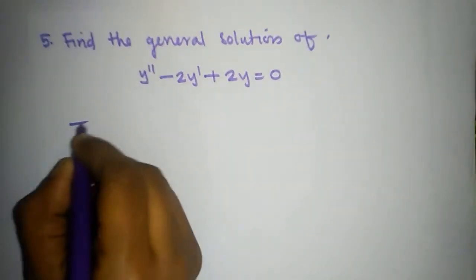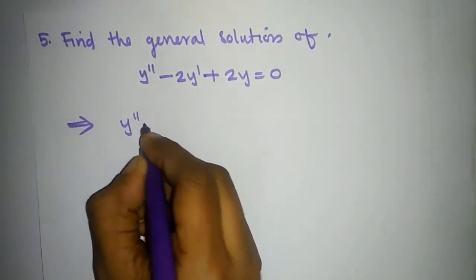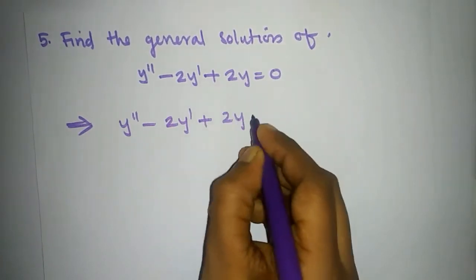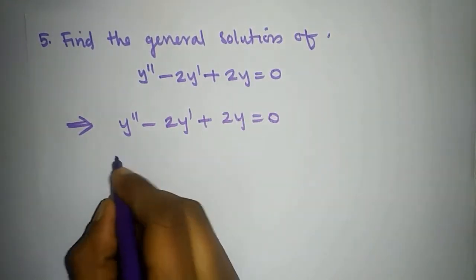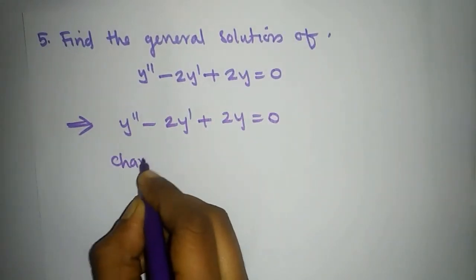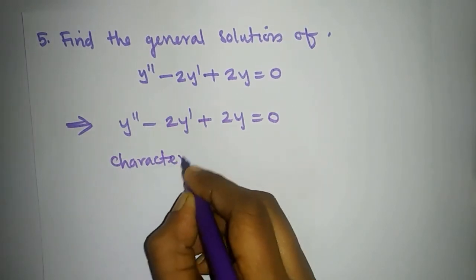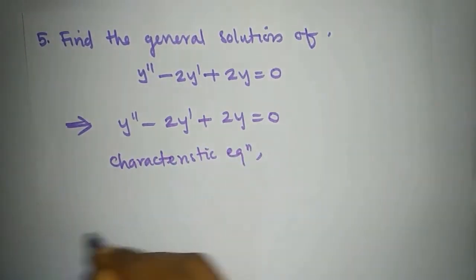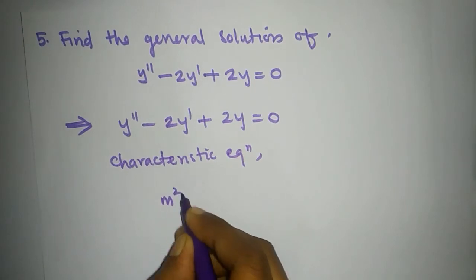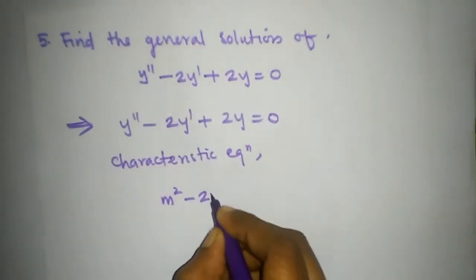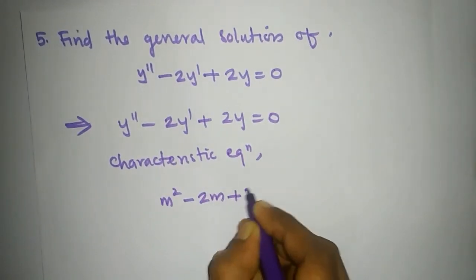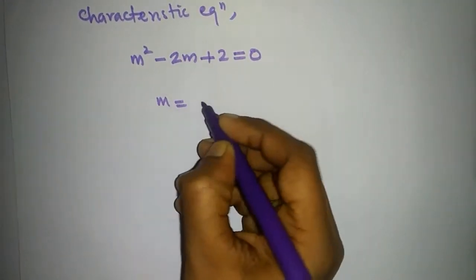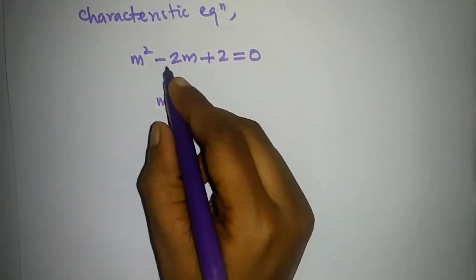Find the general solution of y'' minus 2y' plus 2y equal to 0. This is the differential equation. The auxiliary equation is m squared minus 2m plus 2 equal to 0.